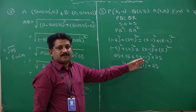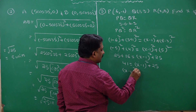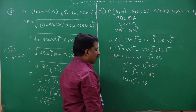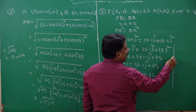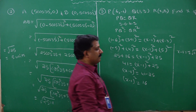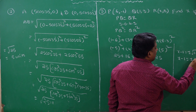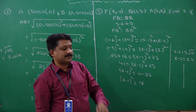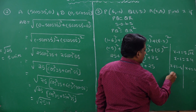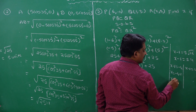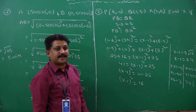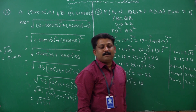Making (x minus 1) all square the subject: (x minus 1) all square equals 41 minus 25, which is 16. So x minus 1 equals plus or minus 4. This gives two cases: x minus 1 equals minus 4, so x equals minus 3; and x minus 1 equals plus 4, so x equals 5. My x values can be minus 3 or 5.